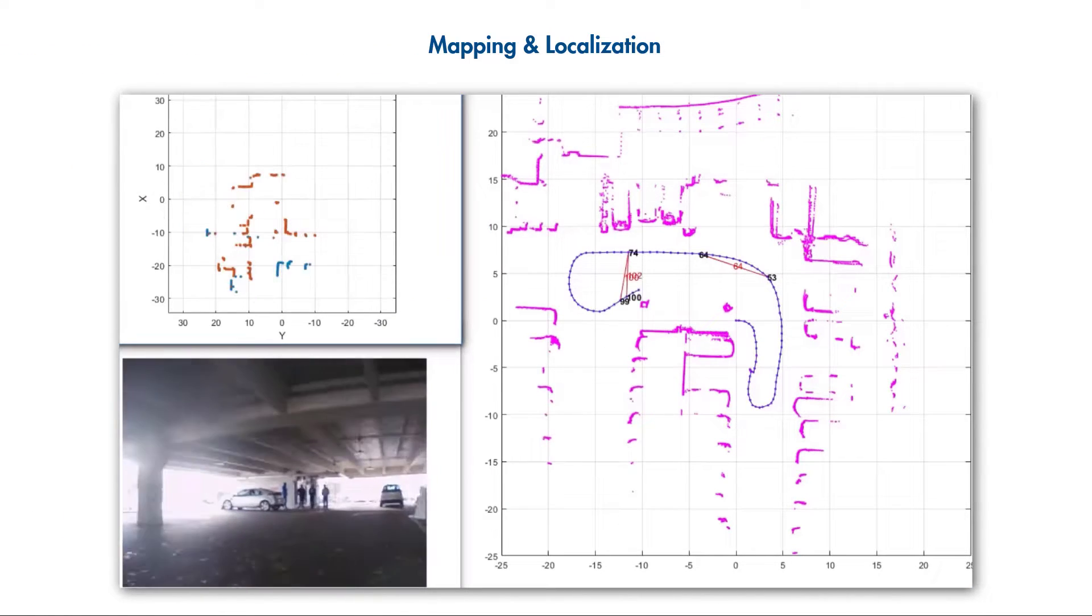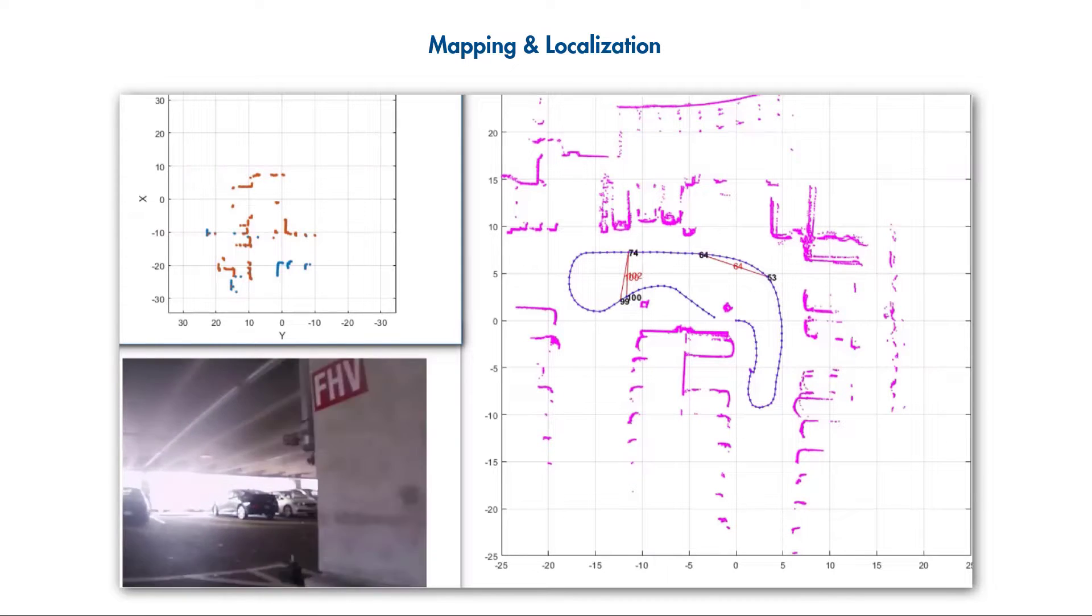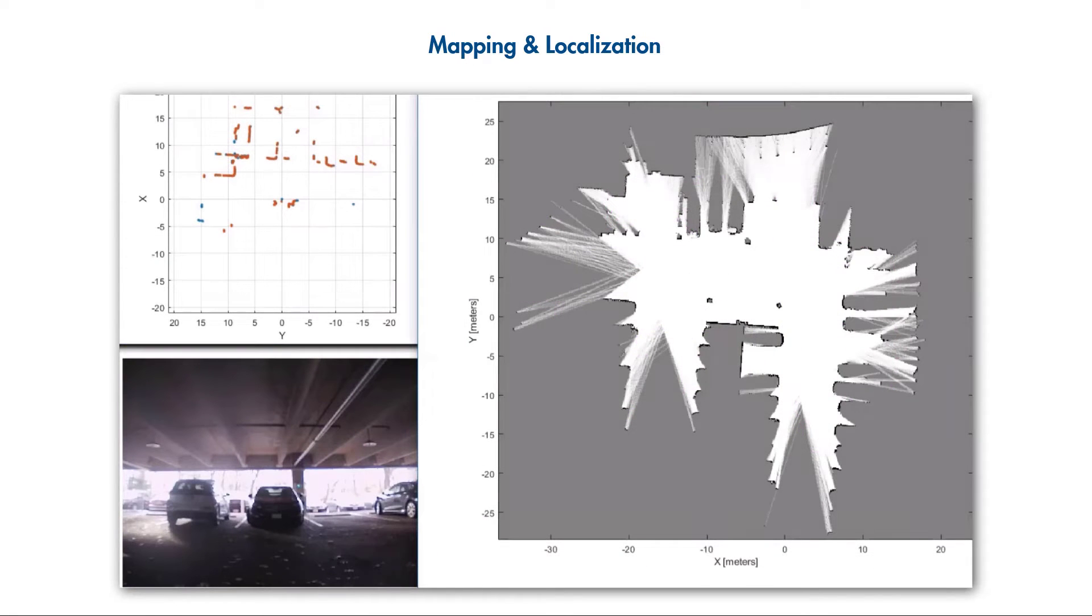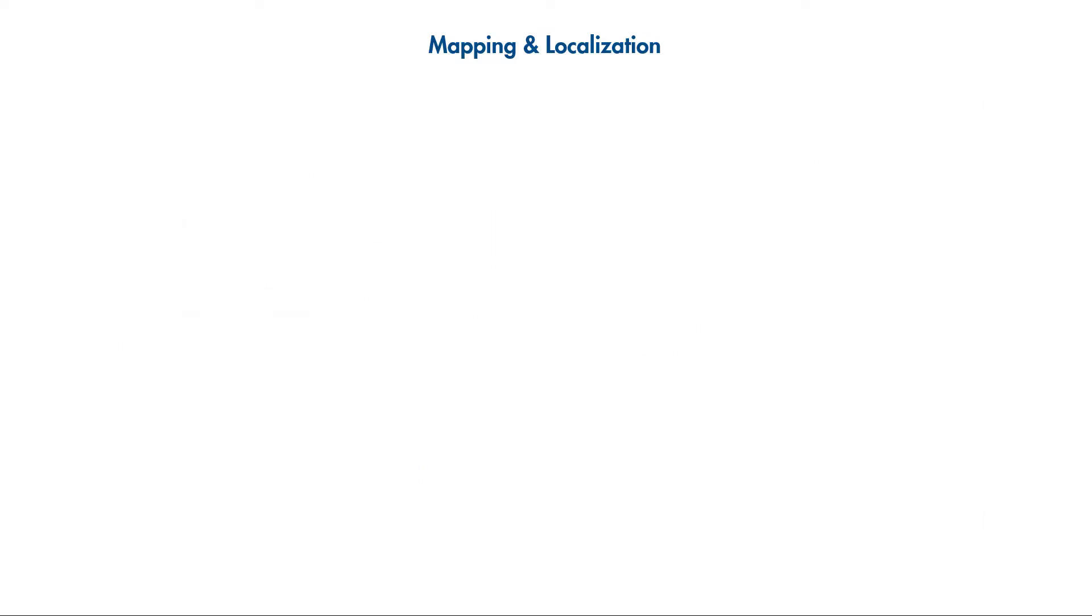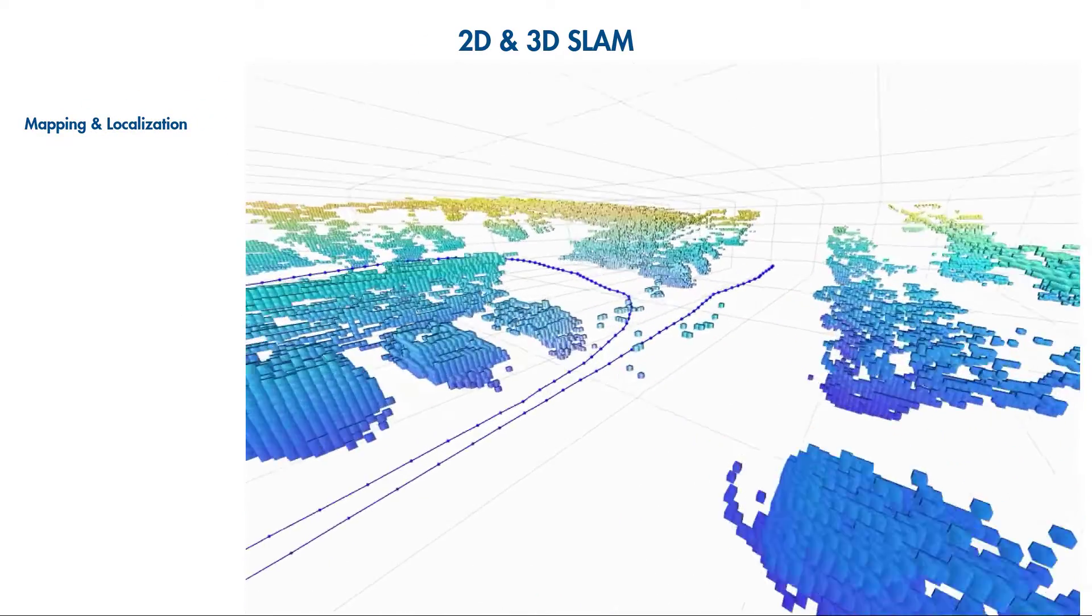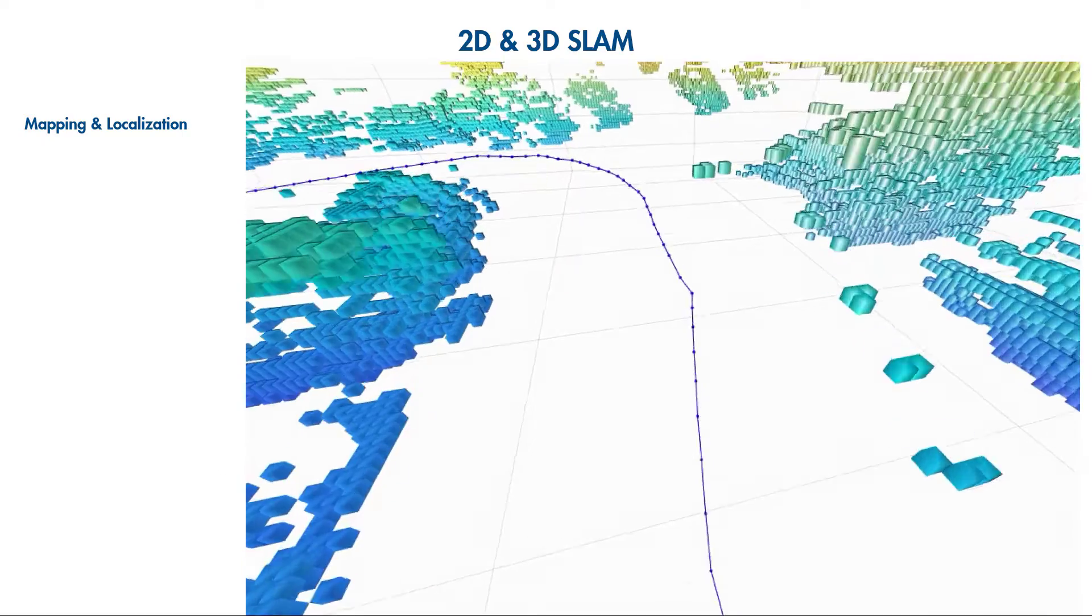Navigation Toolbox provides mapping and localization algorithms to create a map of the environment and estimate the pose of a vehicle. You can implement 2D as well as 3D SLAM algorithms using pose graph optimization.